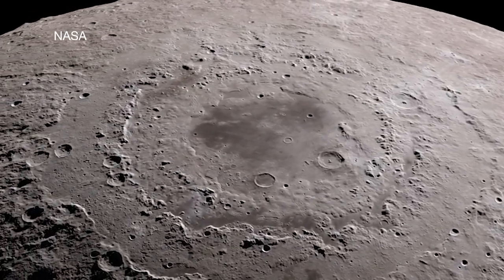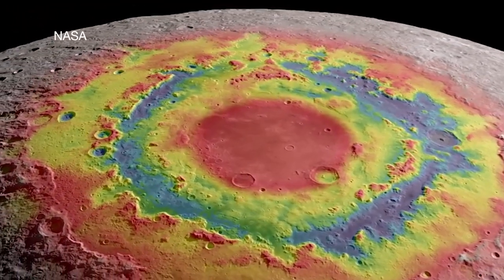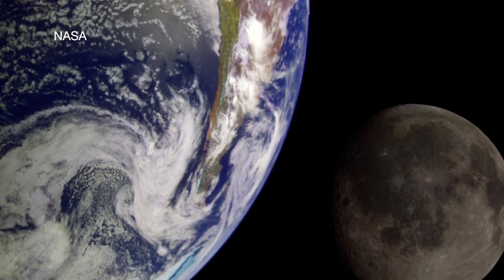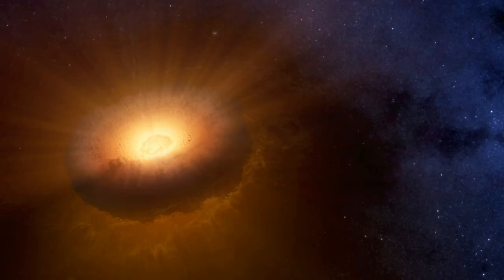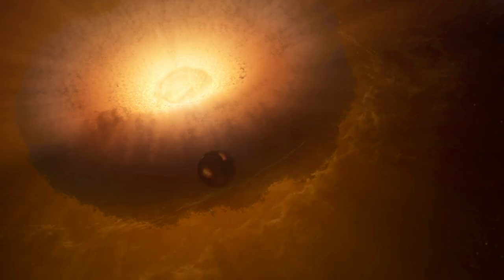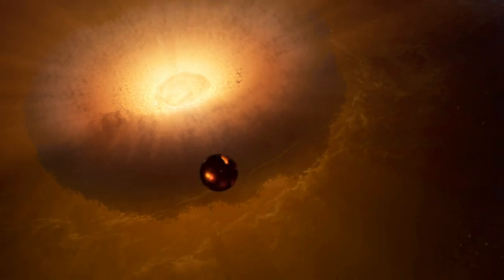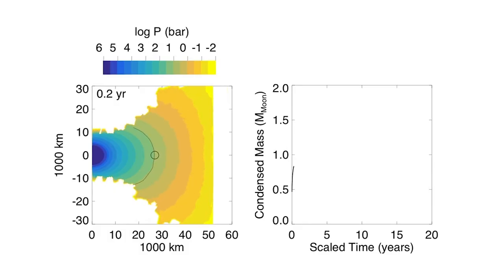Our Moon is a chemical twin to the Earth, and there are no two bodies anywhere else in the solar system that share this connection. We propose that the remarkable similarity between the Earth and the Moon is a result of making the Moon out of a terrestrial synestia. In our model, the Moon accretes within the hot vapor structure and inherits the chemistry of the Earth, and as the system cools, the synestia becomes the cool Earth and the independent Moon.